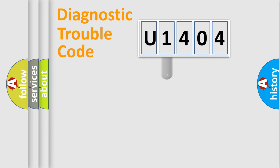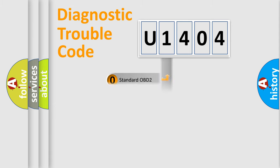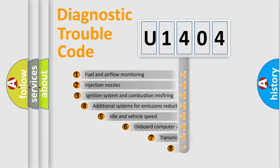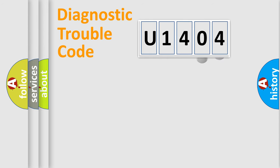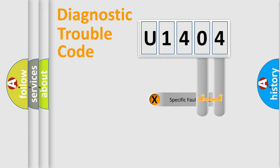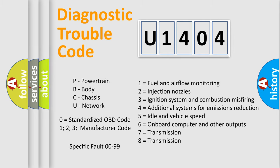This distribution is defined in the first character of the code. If the second character is expressed as zero, it is a standardized error. In the case of numbers 1, 2, or 3, it is a manufacturer-specific error expression. The third character specifies a subset of errors. This distribution is valid only for the standardized DTC code, and only the last two characters define the specific fault of the group. Note that such a division is valid only if the second character code is expressed by the number zero.